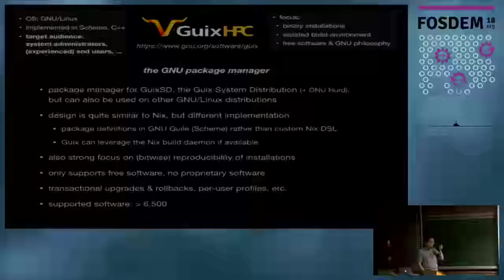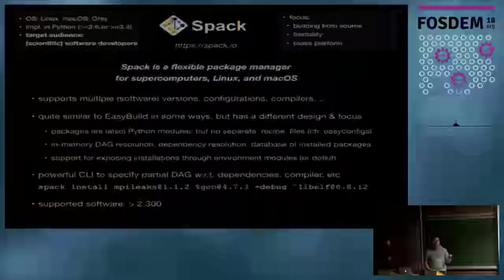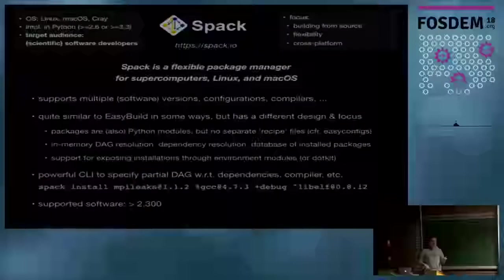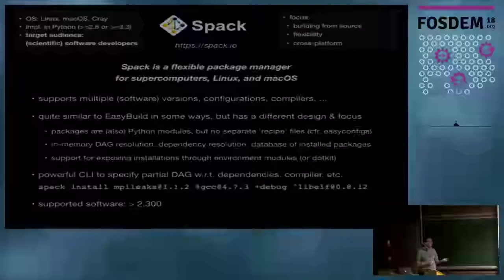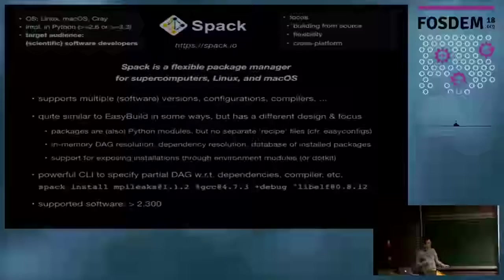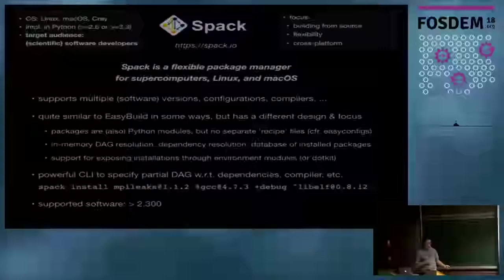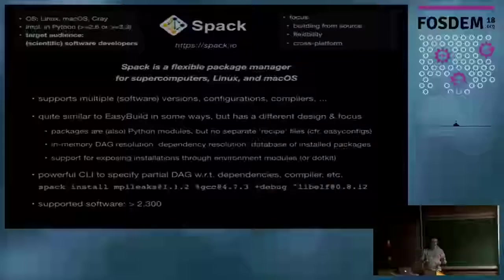Spack is the last one. Also sort of cross-platform: Linux, Mac OS, and Cray. Also implemented in Python. In my view — and I know Todd disagrees — it's mostly targeted towards software developers of big scientific software who need to juggle lots of dependencies. It's similar to EasyBuild in some ways but very different in others. One main difference is the flexibility to juggle dependencies: you can tell Spack to install MPI with a particular version and compiler, lock one dependency to a specific version, and let Spack figure out everything else.